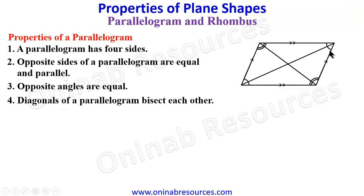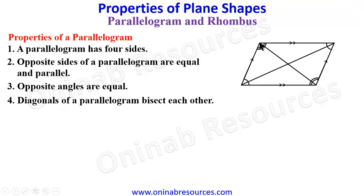Then the next property is that diagonals of a parallelogram bisect each other. This is a diagonal — diagonal means the line joining two vertices. This is the center of the shape and where the diagonals meet. The distance from the center to one edge is equal to the distance from the center to the other edge, for both diagonals. That's what we mean by diagonals bisecting each other.